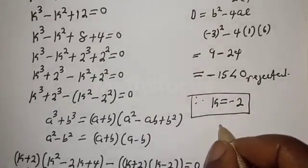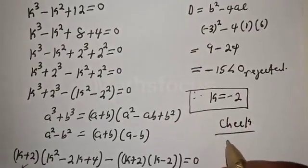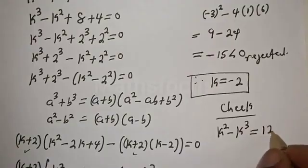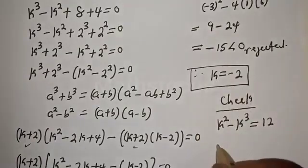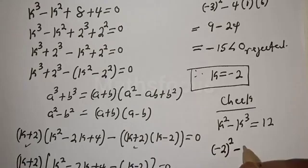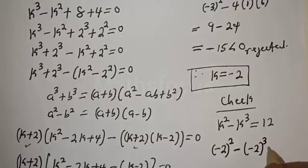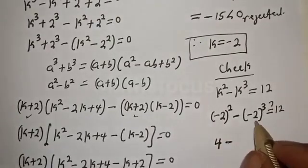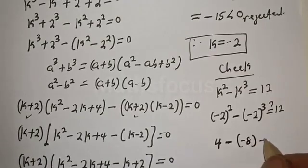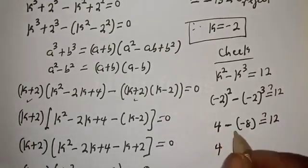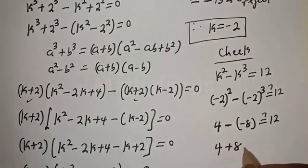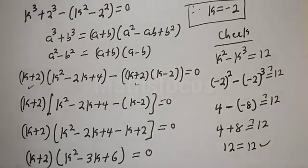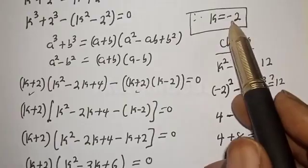We can check to confirm if our answer is right. We have the given equation k squared minus k raised to power 3 is equal to 12. When k is equal to minus 2, we get minus 2 squared minus bracket minus 2 raised to power 3, which must equal 12. Then minus 2 squared is 4, minus bracket minus 8, that is 4 plus 8, which equals 12. This satisfies the equation at k equal to minus 2.